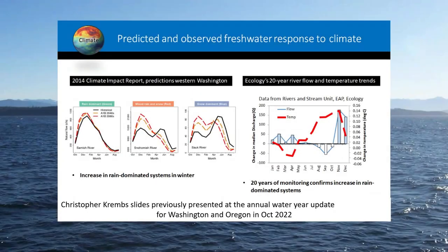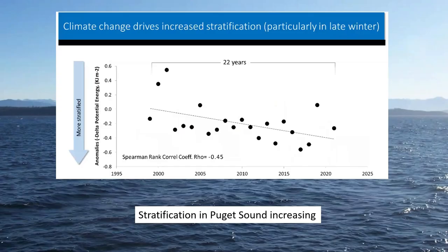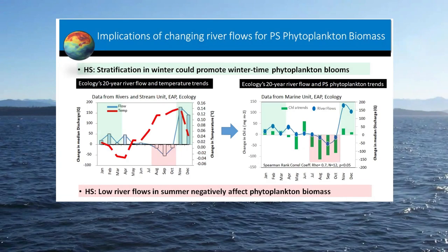It is clear that the climate drivers have changed, and this has led to an increase in stratification in Puget Sound. This change in flow is correlated with changes in chlorophyll over the top 30 meters. In the wintertime with more stream flow, there seems to be slightly higher chlorophyll, but in the summer with lower stream flow, there is lower chlorophyll. So there does seem to be a change in phytoplankton biomass correlated with these climate drivers.